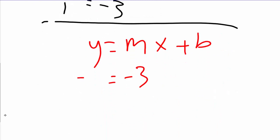Substituting: -2 = -3(4) + b. What is -3 times 4?